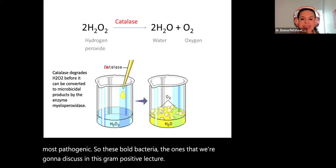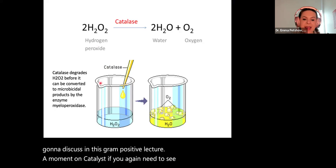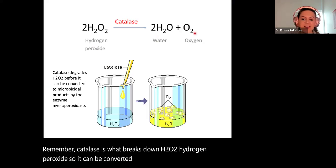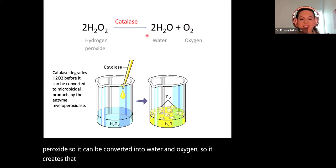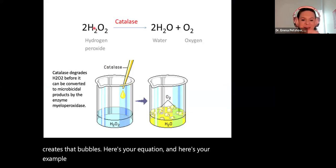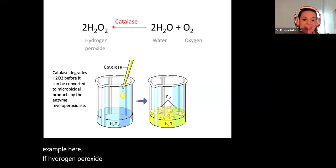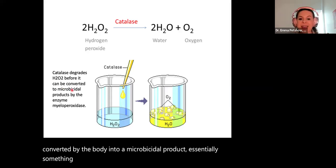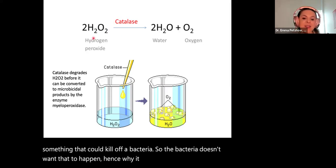A moment on catalase. Catalase is what breaks down H₂O₂ — hydrogen peroxide — converting it into water and oxygen, creating those bubbles. If hydrogen peroxide wasn't broken down by catalase, it could be converted by the body into a microbicidal product — essentially something that could kill off bacteria. So the bacteria doesn't want that to happen, hence why it has catalase as an enzyme to avoid those microbicidal products being created.